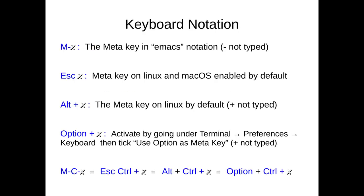Before we can start using shortcuts, we must first locate the meta key. On Linux, this is the ALT key, which is pressed and held along with either the control key or a keyboard character. macOS systems can be configured to use Option as its meta key. It is these combinations of key presses that create a shortcut.